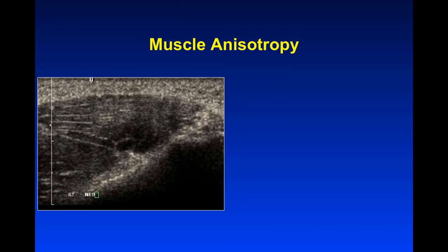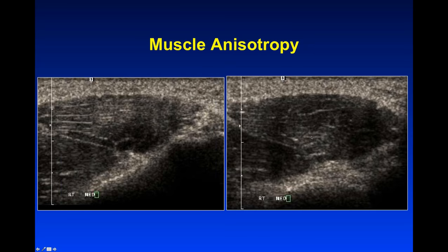Muscles can have anisotropy as well, though not as much as tendons. This is somebody with a painful latissimus dorsi muscle — I thought it could be a muscle tear, but when I rocked the probe it became bright while the rest of the muscle became dark. So it's not pathologic, it's actually normal. Always check for anisotropy before calling pathology — tilt the probe into whatever angles necessary to show that a hypoechoic area is not simply anisotropy.